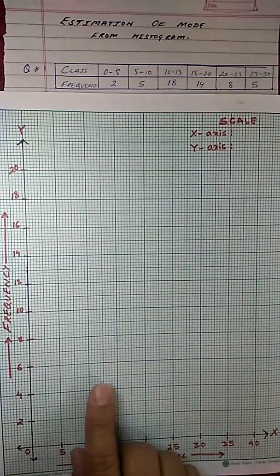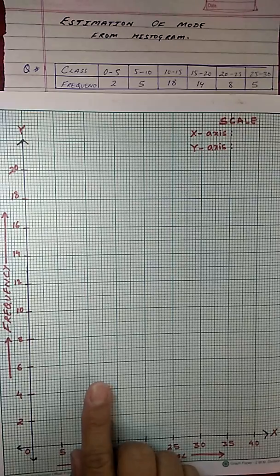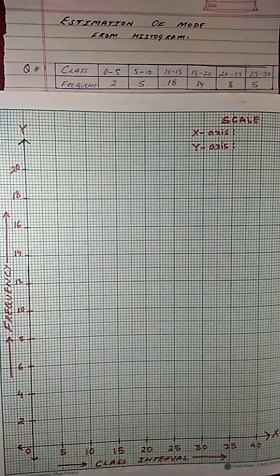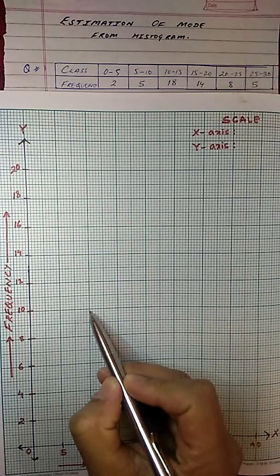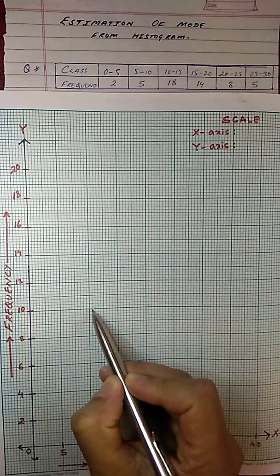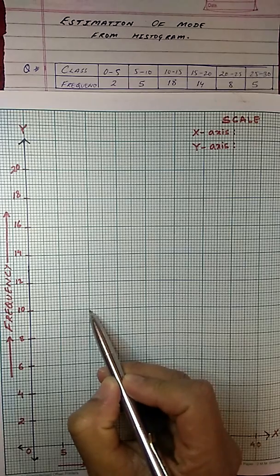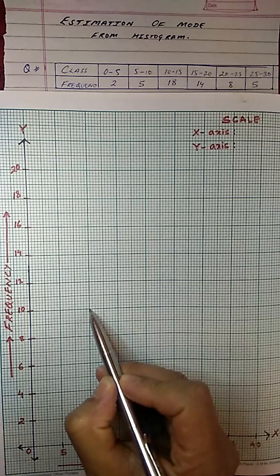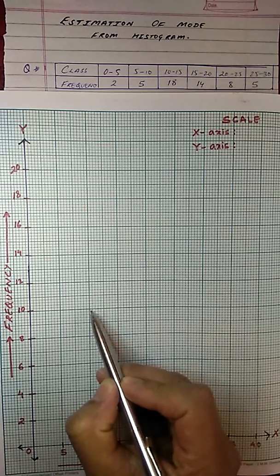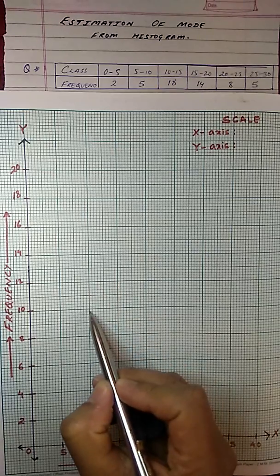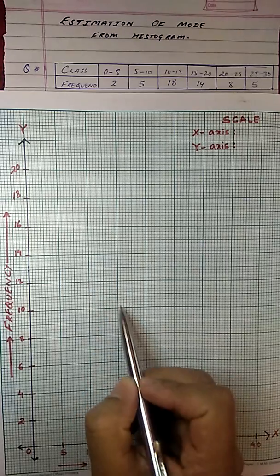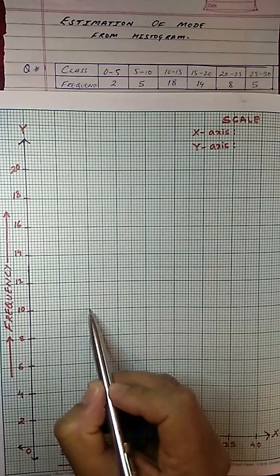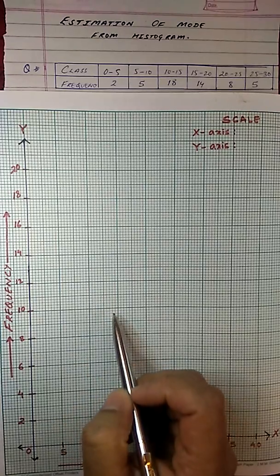Let me tell you that this particular graph paper is a 2mm graph paper. That means each small division that you could see from here to here is 2mm and the small box from here to here is of 1cm and the bigger box is of 2cm square. That means the distance from here to here is 2cm and from here to here is 2cm.